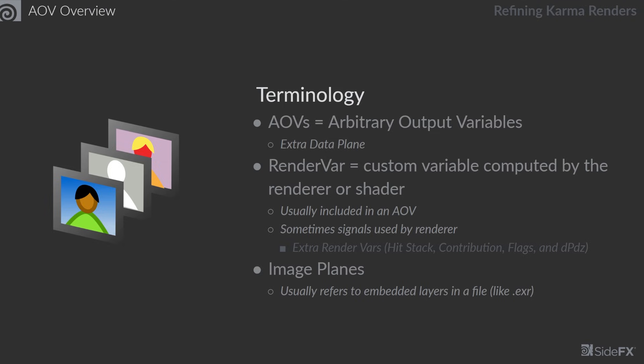Finally, you might hear the term image planes. This usually refers to things like layers in a file, like an EXR layer — we might call those image planes. They're usually embedded in the file, and when you open them up in an application like Photoshop, you might see them as different layers stored in that same file. One really important thing to note is that oftentimes these terms can be interchanged with each other when we're not being super careful about terminology.